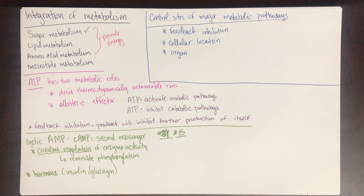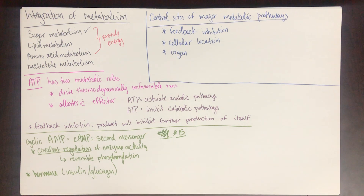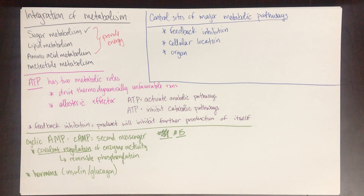The next pathway in the notes is called the pentose phosphate pathway. This is a pathway we use to produce nucleotides from glucose 6-phosphate. Nucleotides have a sugar in them — deoxyribose is in DNA, ribose is in RNA. The precursors for these nucleotides come from glucose 6-phosphate, which is the first step in glycolysis. We won't discuss the pentose phosphate pathway in detail until we cover nucleotides.